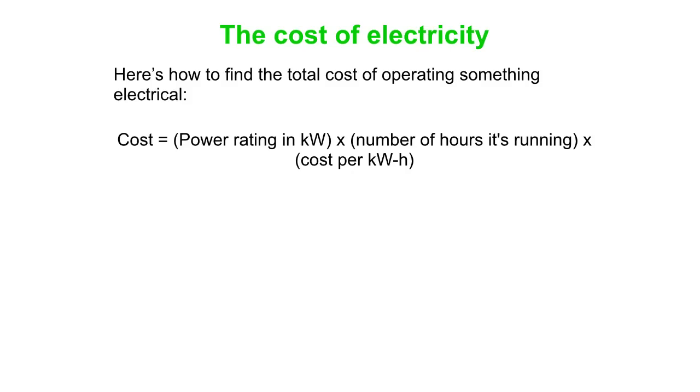So if you've got something plugged into the wall and you're using your hair dryer or whatever it is, you can figure out the cost by the power rating in kilowatts times the number of hours it's running times the cost per kilowatt hour. And that cost per kilowatt hour is something in the ballpark of 10 to 20 cents per kilowatt hour.